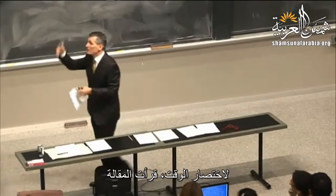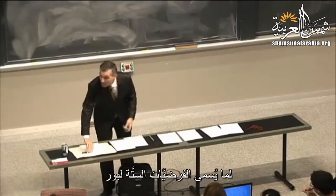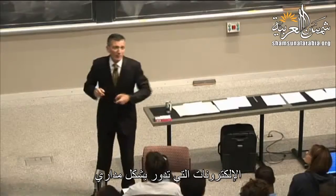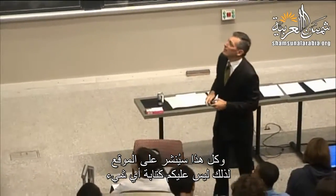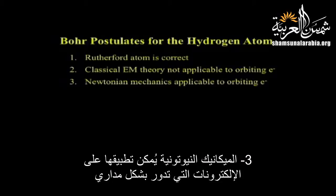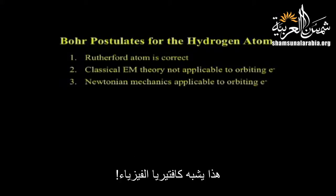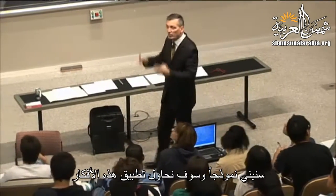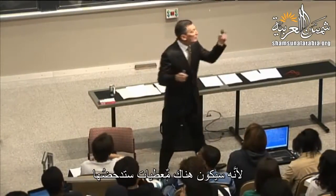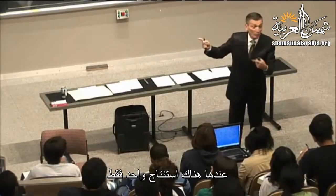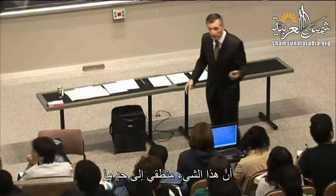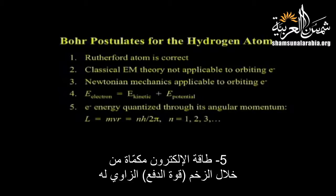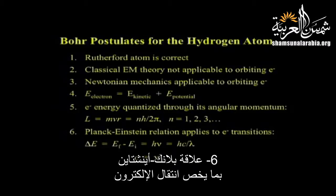I've reduced the content of the paper to postulates. First: the Rutherford atom is correct. Second: classical electromagnetic theory is not applicable to the orbiting electron. Third: Newtonian mechanics is applicable to the orbiting electron — so it's cafeteria physics: electrodynamics doesn't apply, Newtonian mechanics does. Fourth: the energy of the electron is a conservative system — kinetic plus potential. Fifth: quantization through angular momentum. Sixth: the Planck-Einstein relation applies to electron transitions.